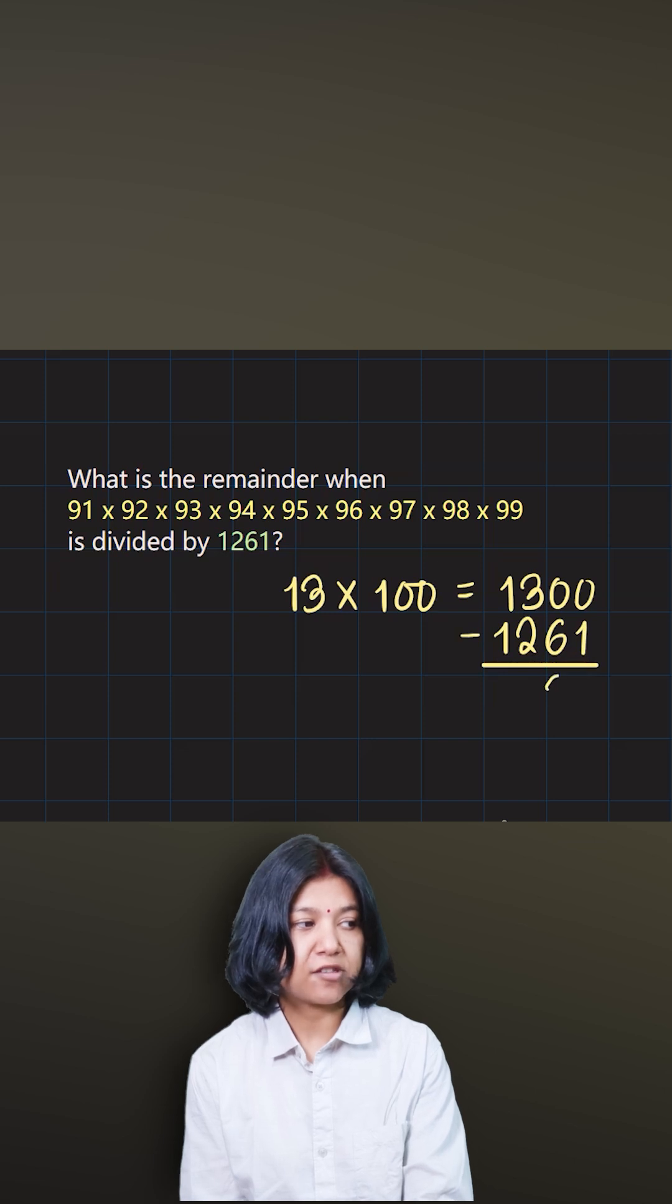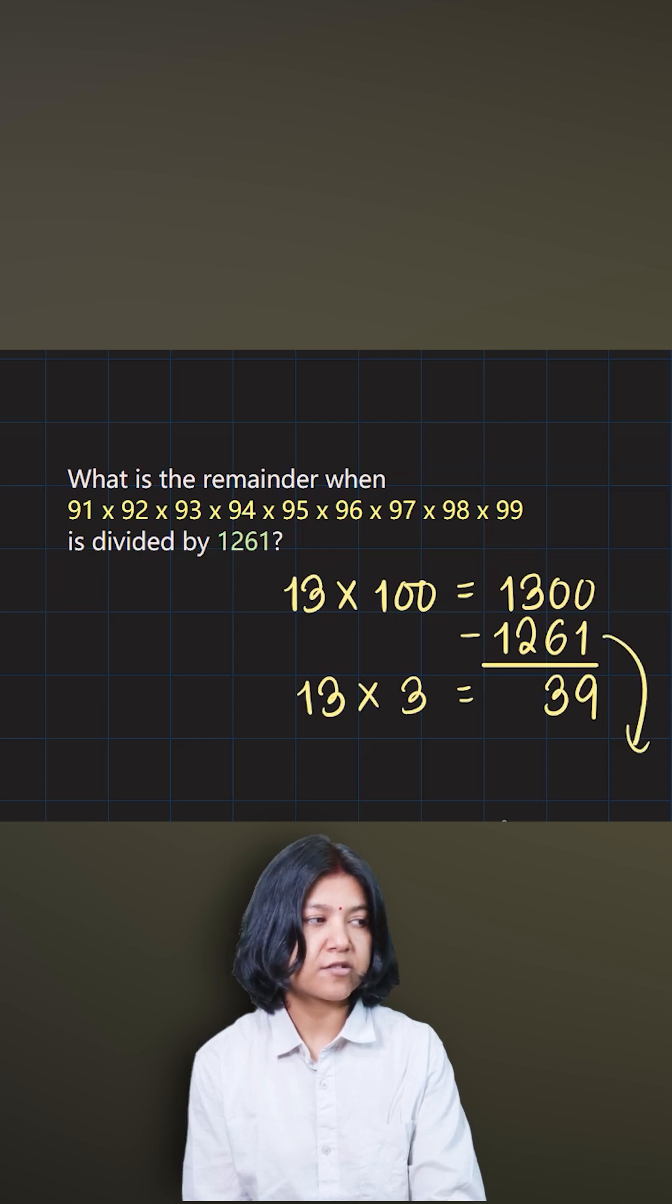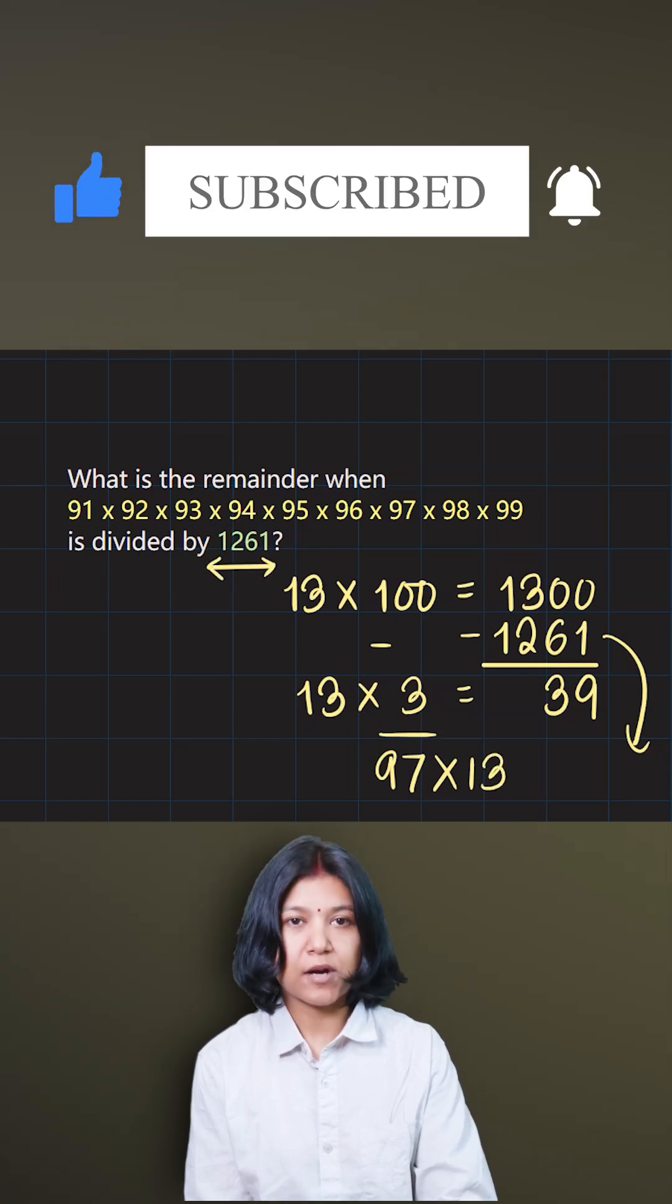The remainder here has to be 39 and I know 13 times 3 is 39. So which means I can clearly see that 100 minus 3 is 97. So I'm very confident that 97 times 13 is this given number 1261. 13 times 97 gives you 1261.